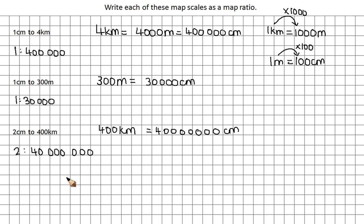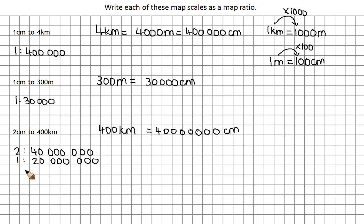It would show a lot of information. We're not quite finished though, because really, if we can, we want to try and get it in the simplest form. So to simplify that, we can divide both sides of this ratio by 2. So 2 divided by 2 is 1, and 40 million divided by 2 is 20 million. So my final ratio is 1 to 20 million. So 1 cm on the map represents 20 million cm in reality — or 200 km, which sounds more sensible.